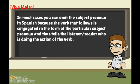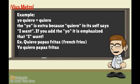In most cases, you can omit the subject pronoun in Spanish because the verb that follows is conjugated in the form of the particular subject pronoun, and thus tells the listener or reader who is doing the action. For example, you could say 'yo quiero,' or you could just say 'quiero.' The 'yo' is extra, because 'quiero' in itself means 'I want.' If you add the 'yo,' it is emphasized that I want. For example: 'quiero papas fritas' — I want french fries.